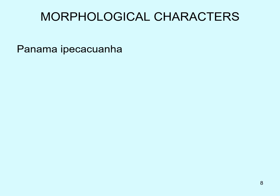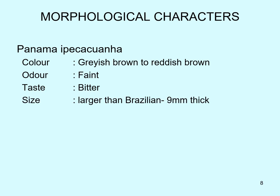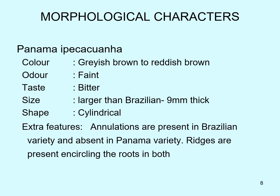The other species, from Panama, known as Panama Ipecac, has a greenish brown to reddish brown color, with faint odor and bitter taste. It is larger than Brazilian Ipecac, being 9 mm thick, and cylindrical in shape. Notably, annulations are present in the Brazilian variety and absent in the Panama variety, while ridges encircling the roots are present in both.